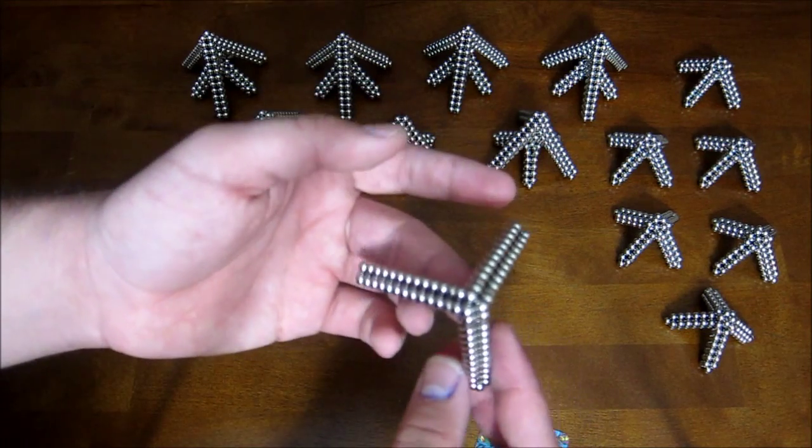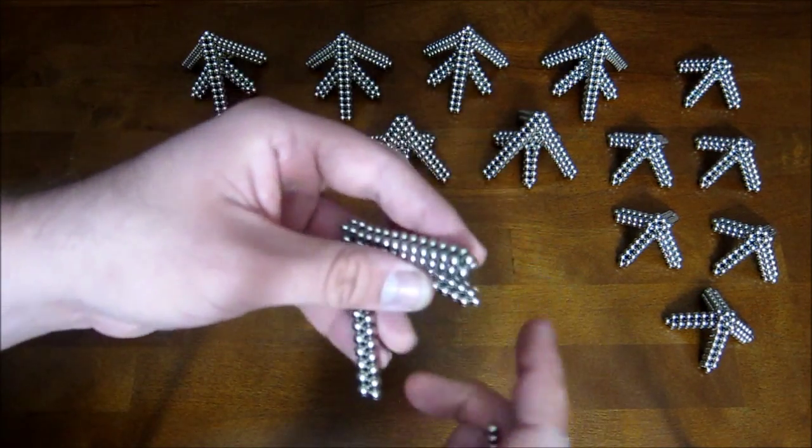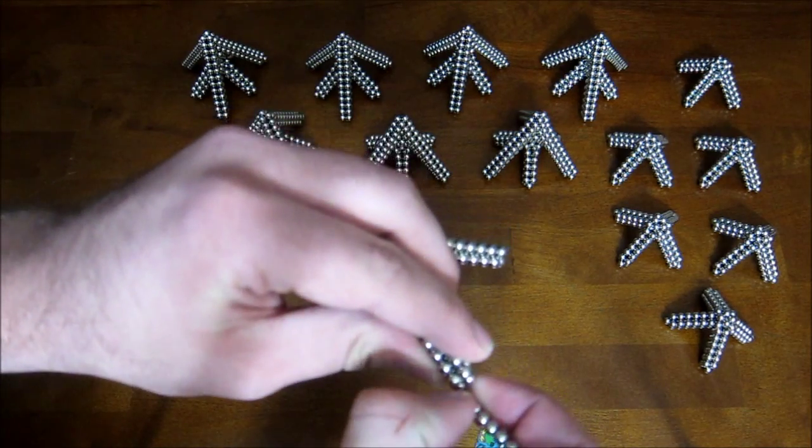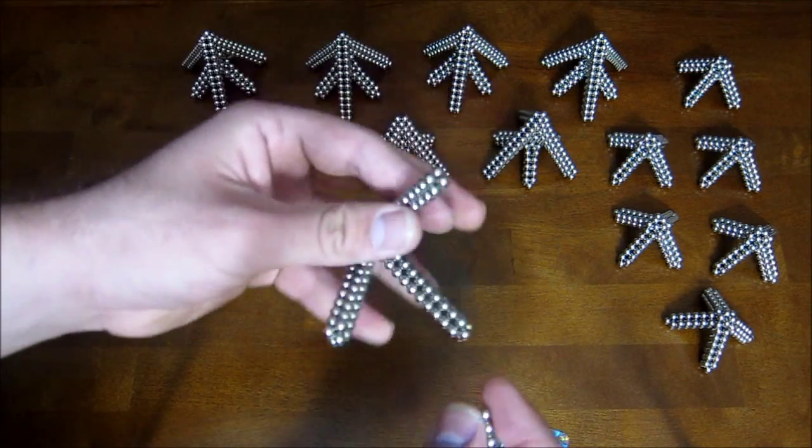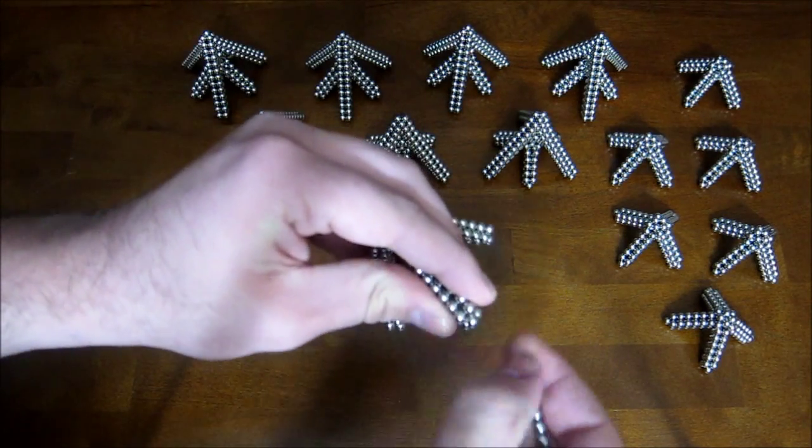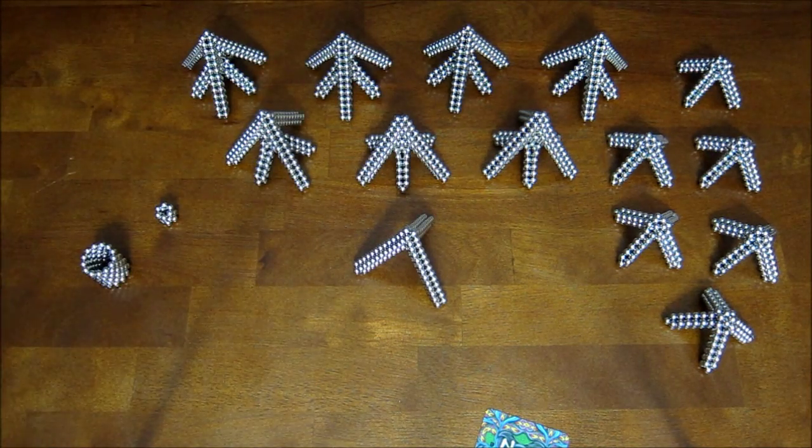Now the three legs are uneven. There's a short leg, a medium length leg, and a long leg. You want to make them all like the short leg. So from the medium leg you have to remove two magnets. And from the long leg you have to remove four. And now you have that.